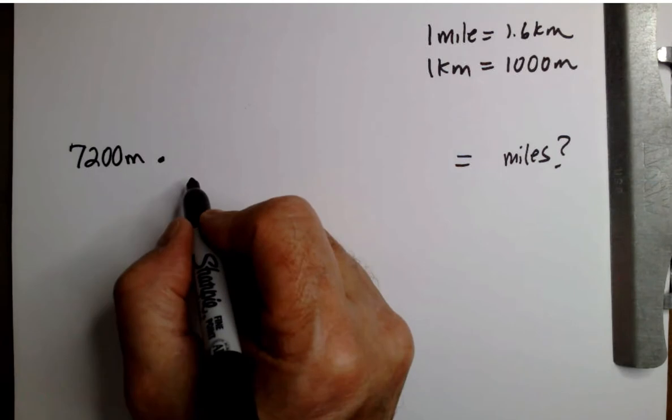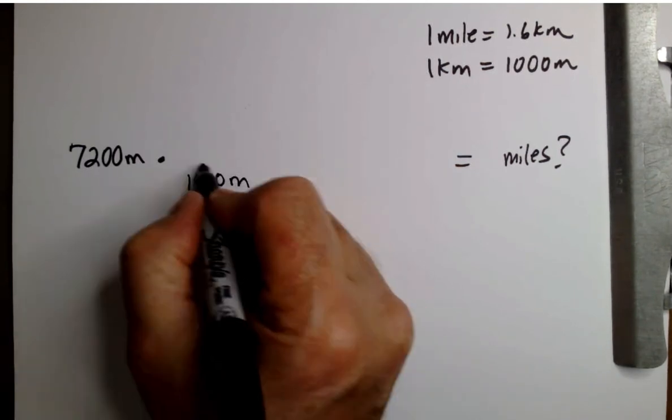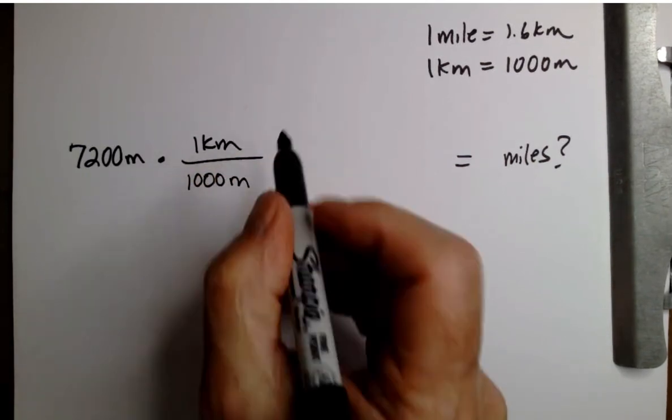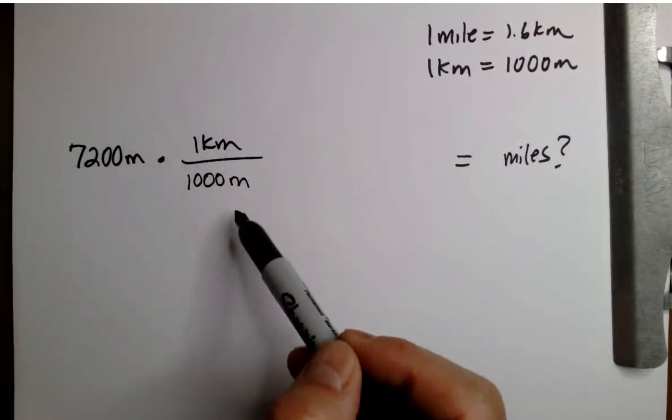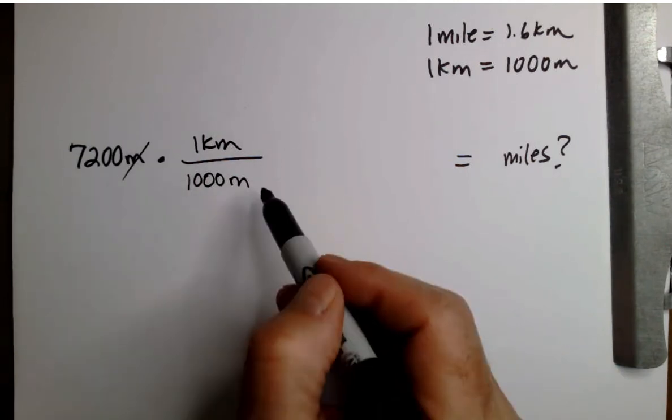So let's do that. So the thing that we're trying to get rid of goes on the bottom. Notice that I'm saying one kilometer is the same thing as a thousand meters. That allows us to cancel meters.